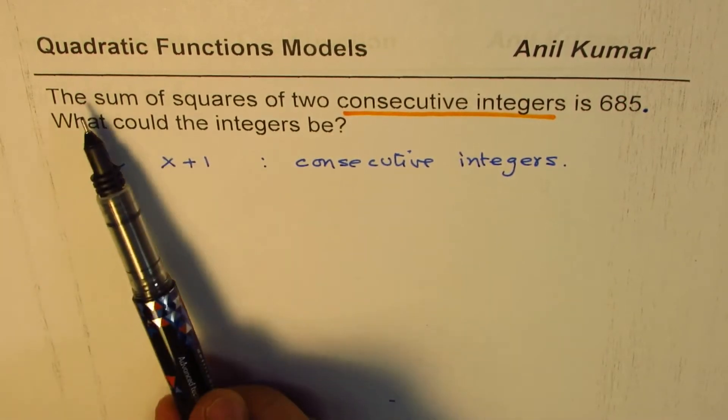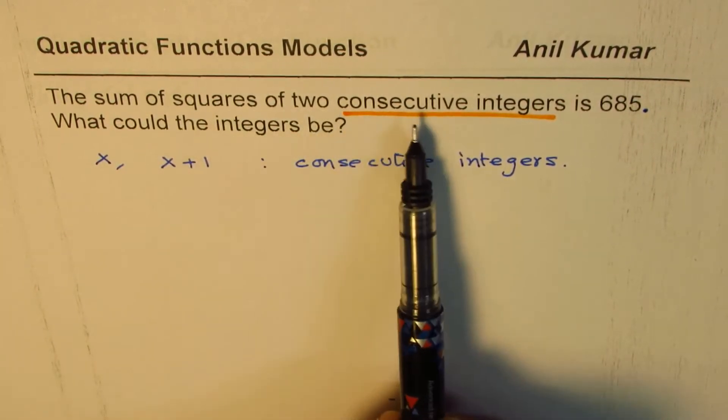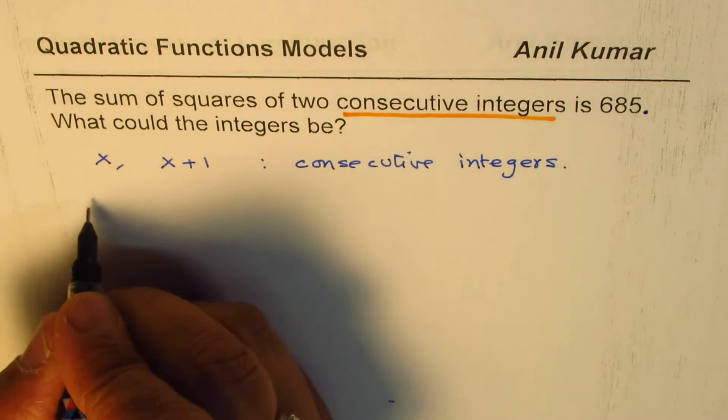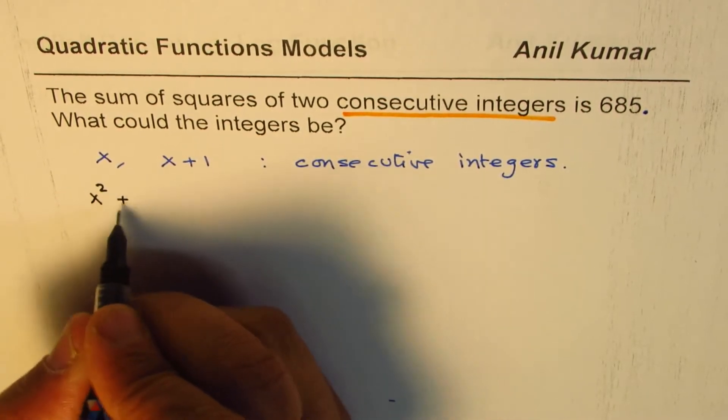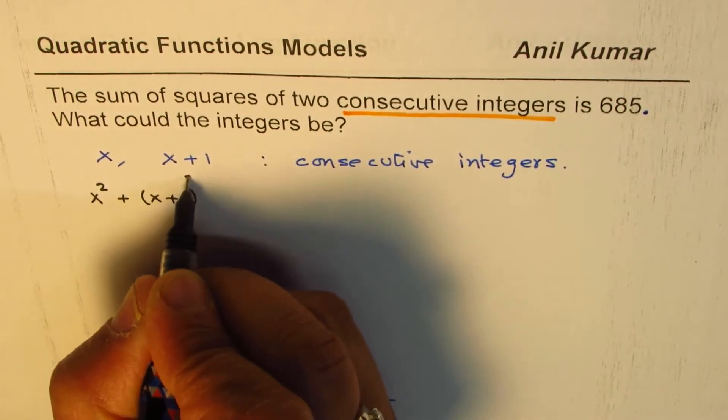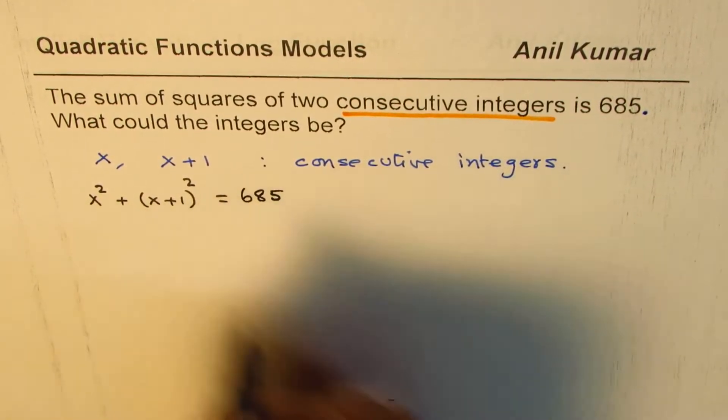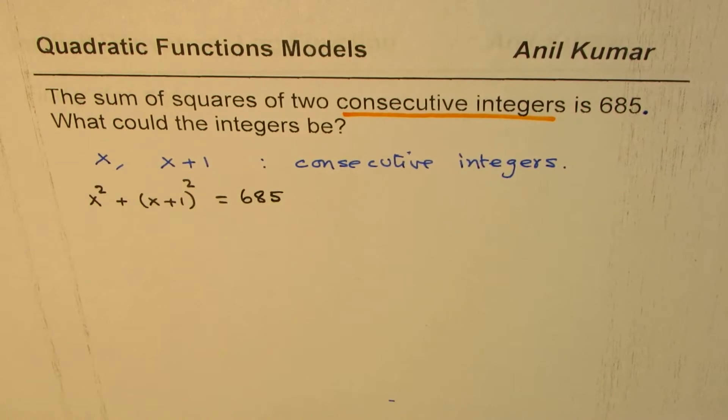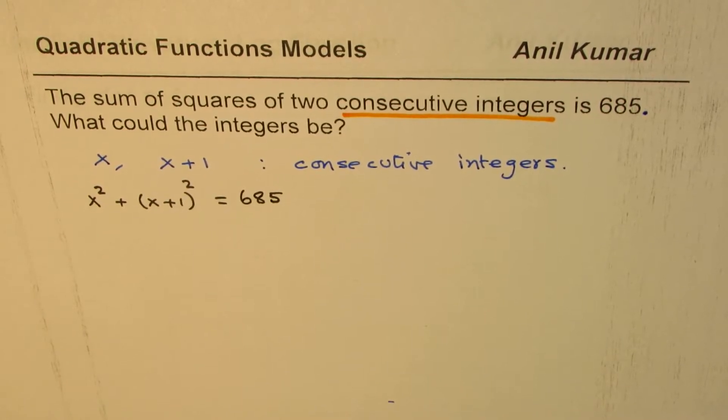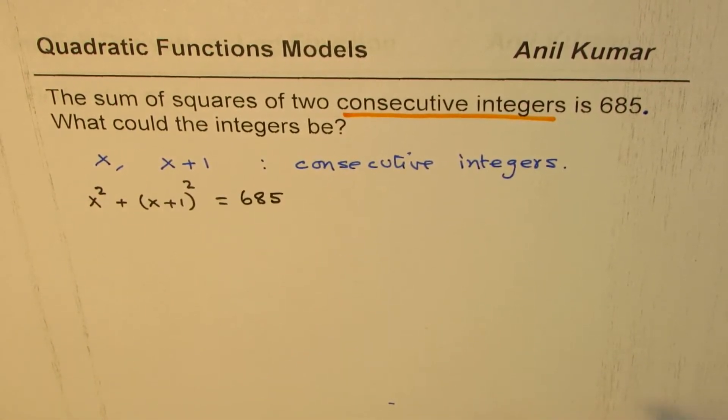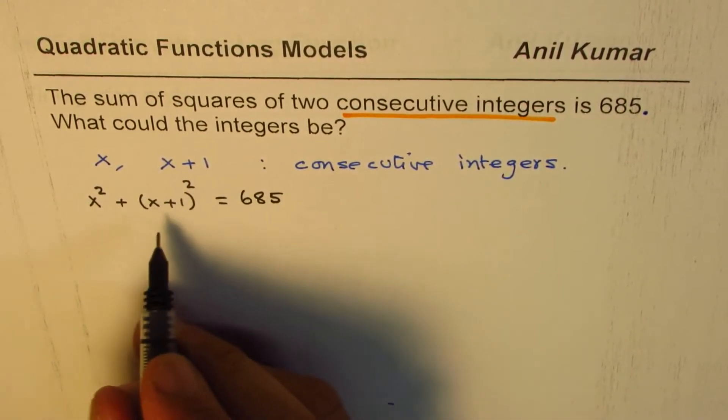It says the sum of squares of two consecutive integers—that means squares of these: x squared plus, sum means plus, square of this, is 685. We need to find what these integers are. Not become simpler, right? So definitely you can anytime pause and answer and go at the end just to check your solution.